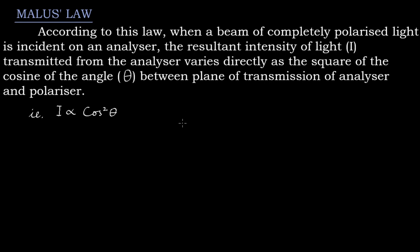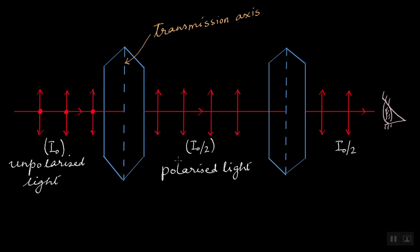Theta is the angle between the transmission axis of the polarizer and the analyzer. Basically, this law tells us about the intensity — how high or how low the intensity would be — of the transmitted light, the light that is transmitted from the analyzer. Referring to this figure, Malus's Law talks about the intensity of the light coming out from the analyzer. Let's say the original intensity of unpolarized light is I₀.